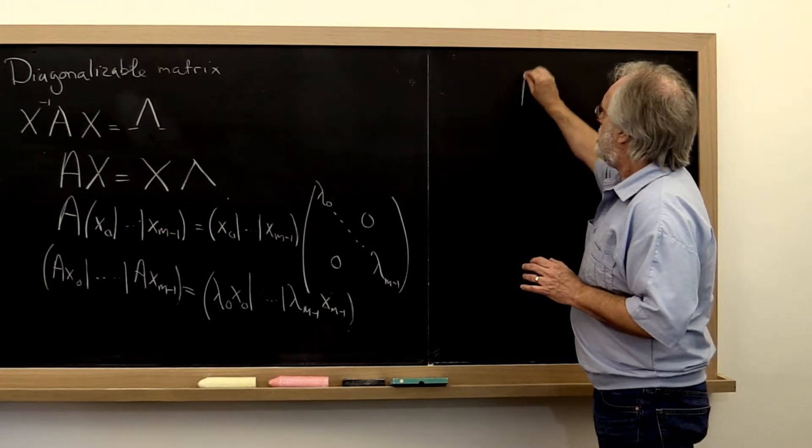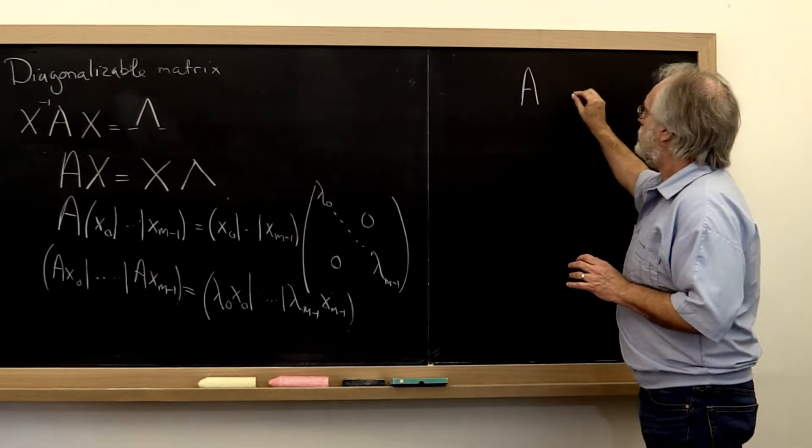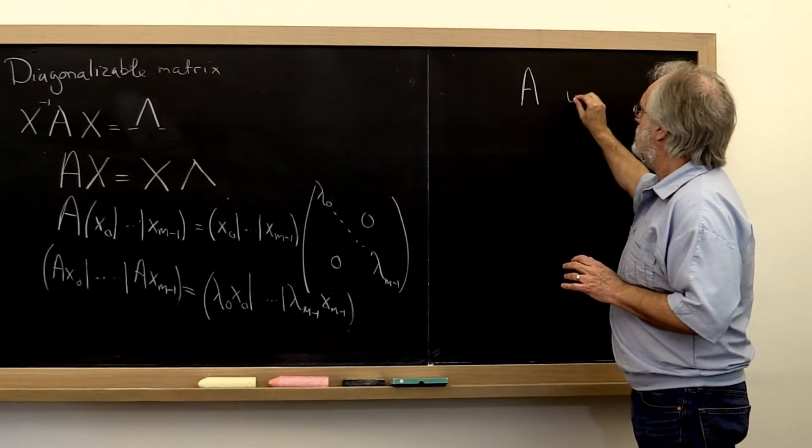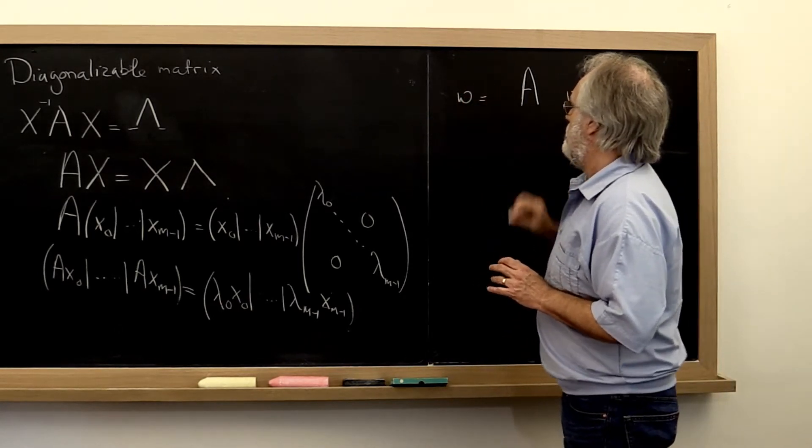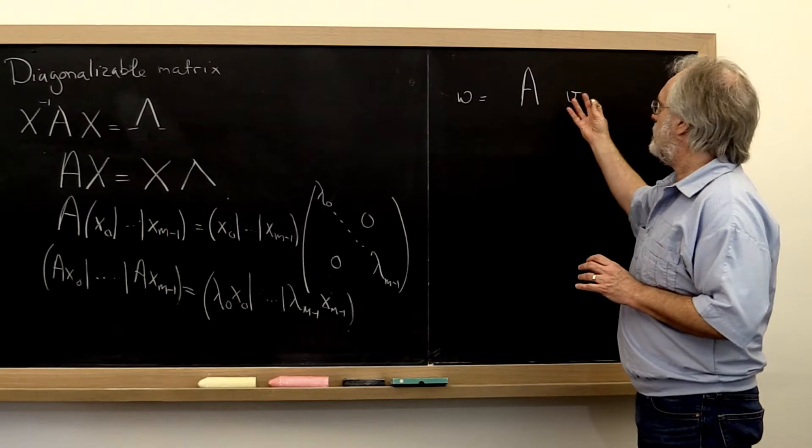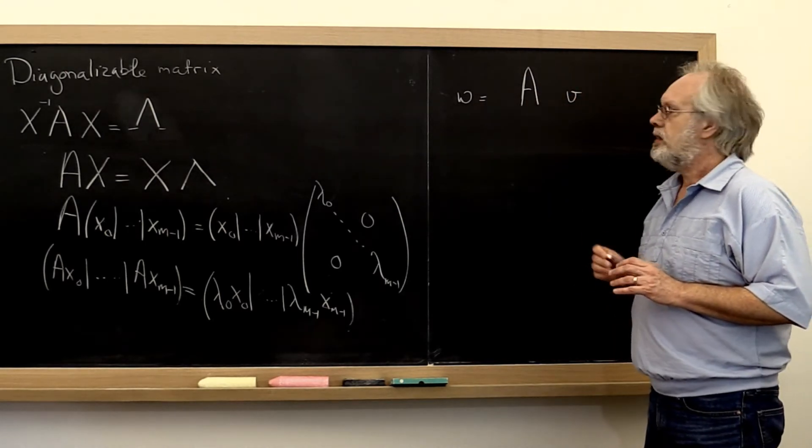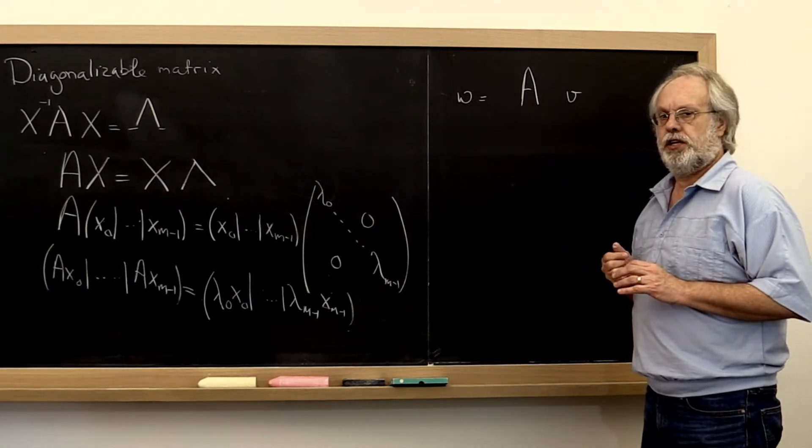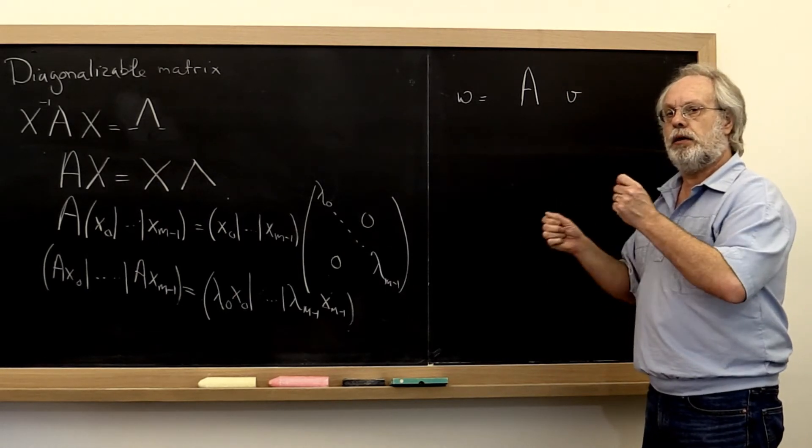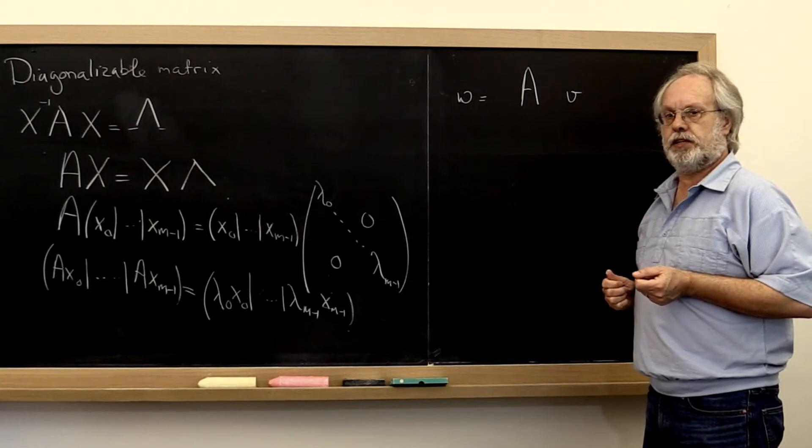If we have a matrix A and we apply it to our vector v, then we end up with a vector w. A maps the vector v to w. Now here v really is the vector of coefficients that tell us how to take linear combinations of the standard basis vectors.